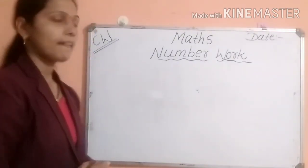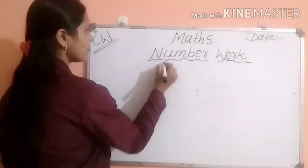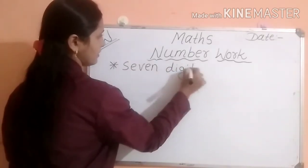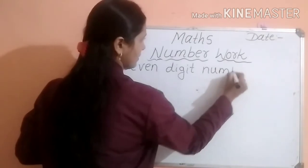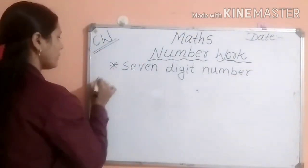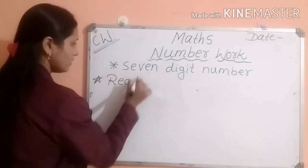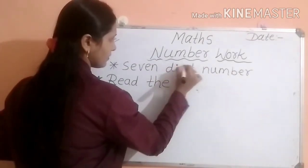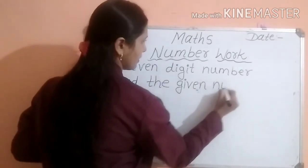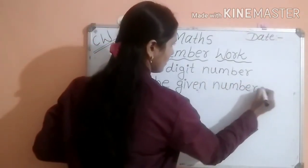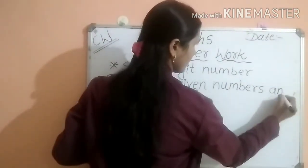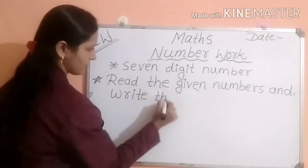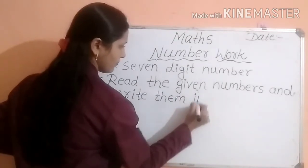Mention CW and today's date in your notebook, then number one, our lesson name, then your seven-digit number. The question you have to write is: read the given numbers and write them in words.